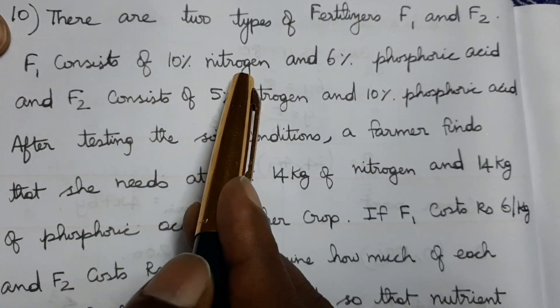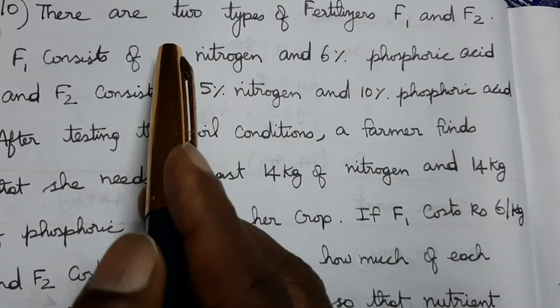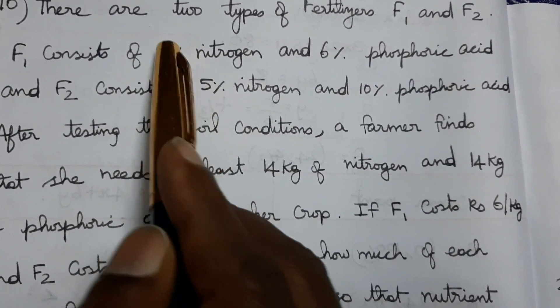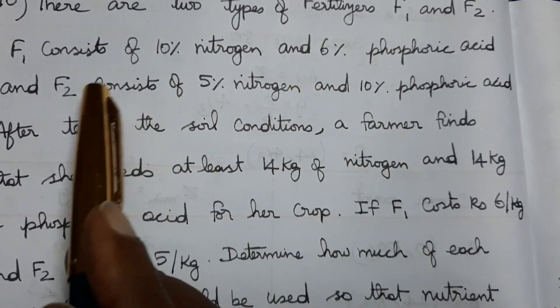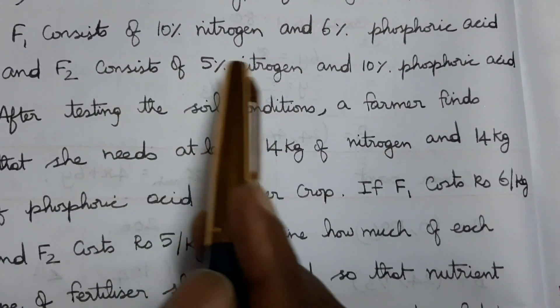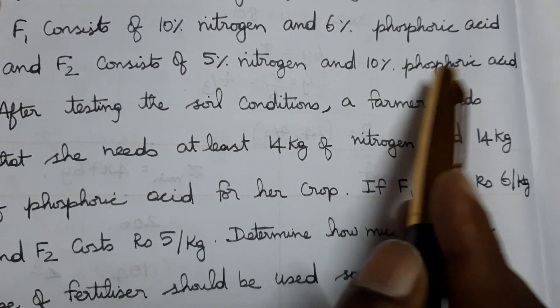F1 consists of 10% nitrogen and 6% phosphoric acid. F2 consists of 5% nitrogen and 10% phosphoric acid.